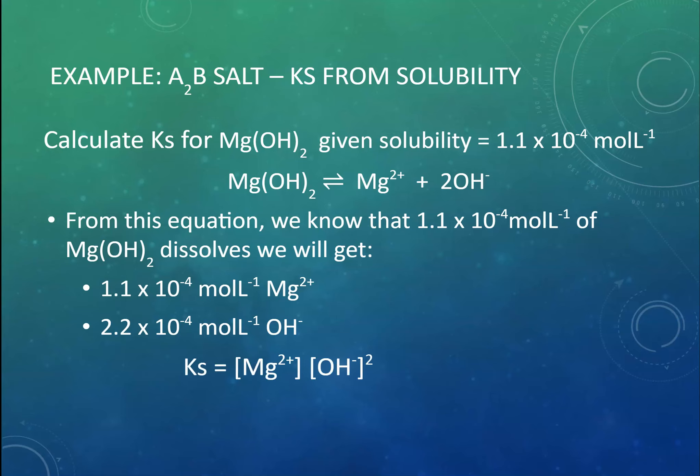We have our Ks expression, magnesium times hydroxide squared. And so, we can simply substitute those numbers in and solve it, giving Ks of 5.3 × 10⁻¹².